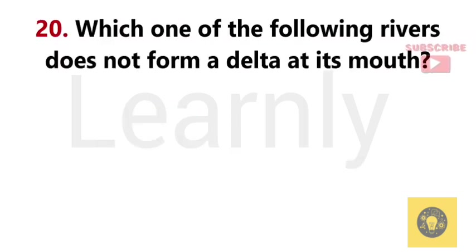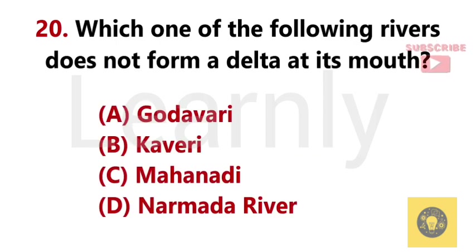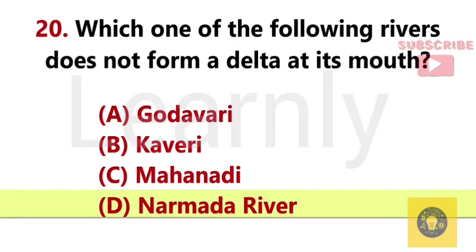Which one of the following rivers does not form a delta at its mouth? Answer D. Narmada River.